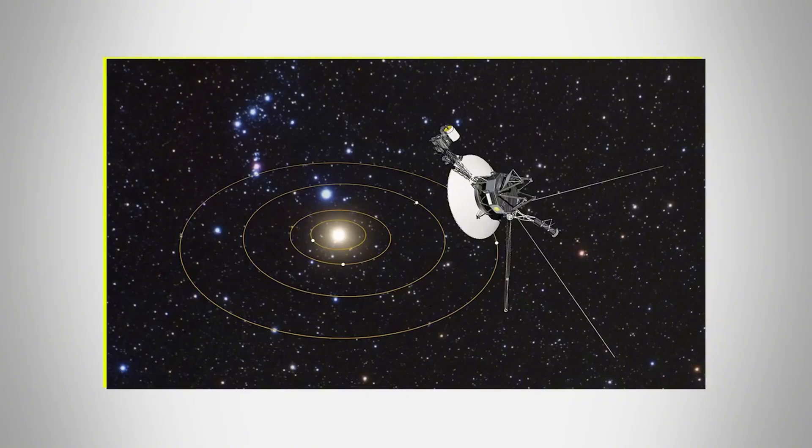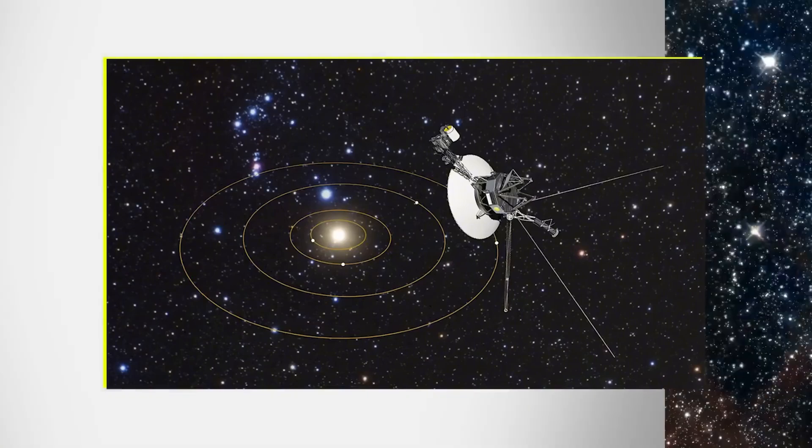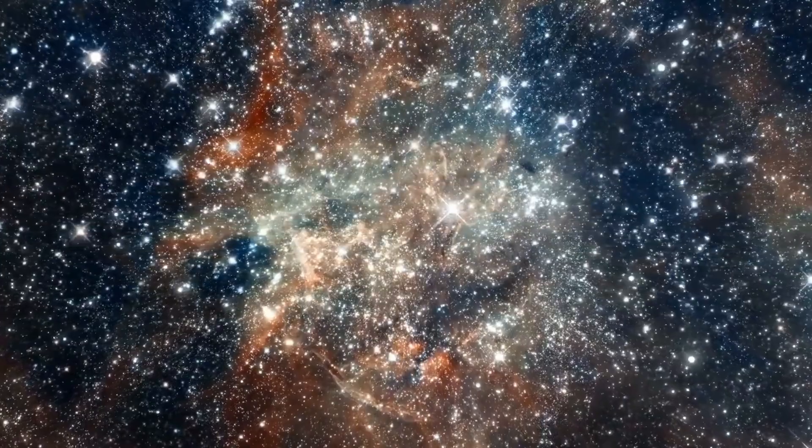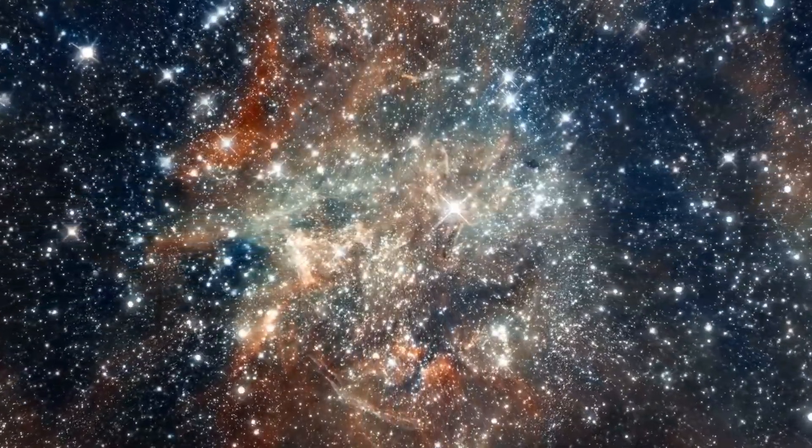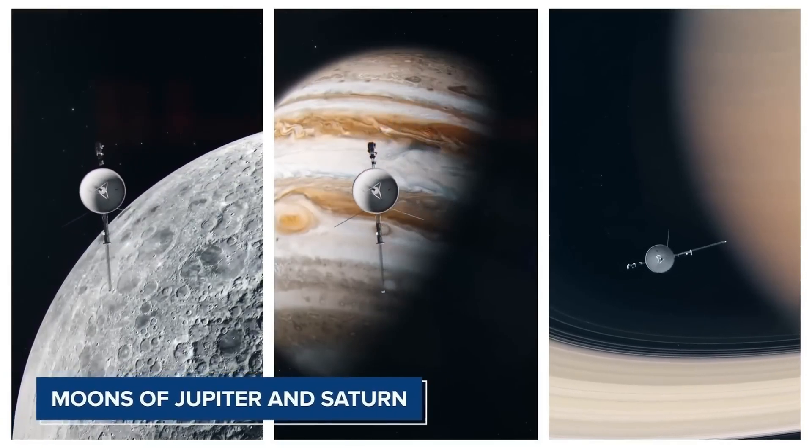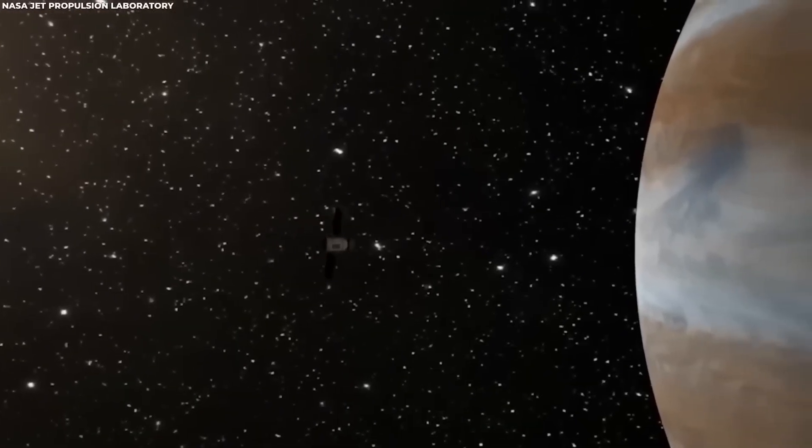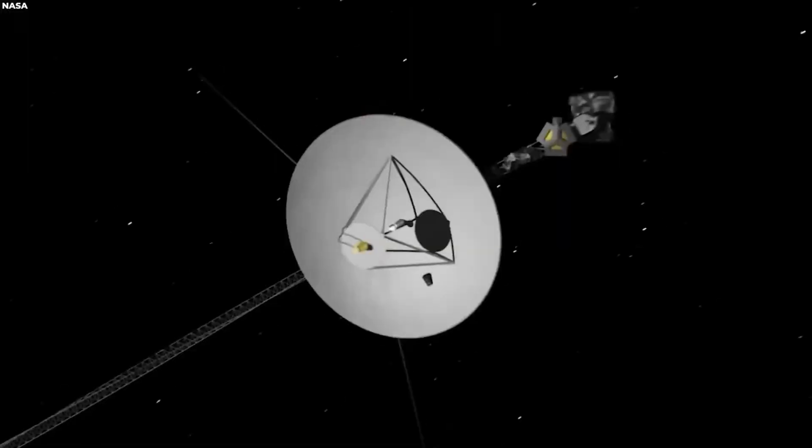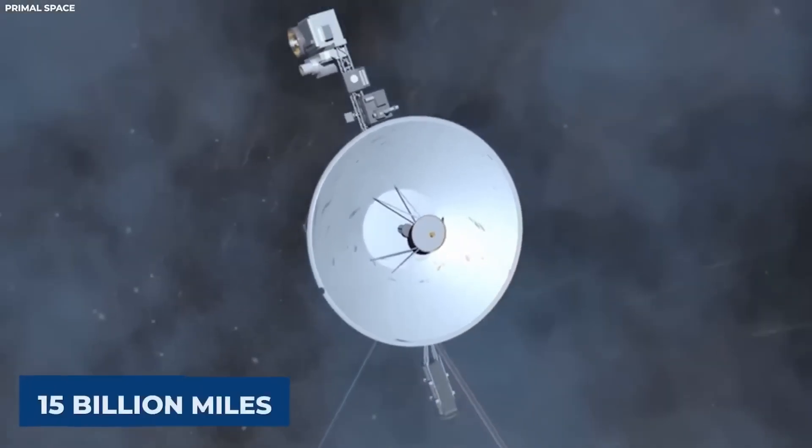Given the probe's age and limited power generation, many subsystems and heaters have been shut down over time to conserve power for critical systems and scientific instruments. As Voyager 1 faces this question today, it recalls one of its most historic moments, its arrival at Jupiter in 1979.